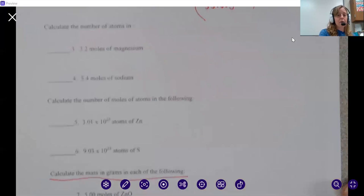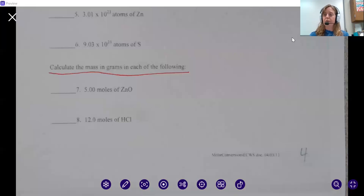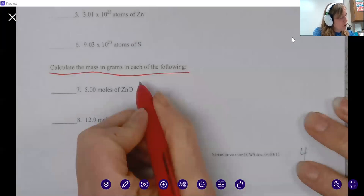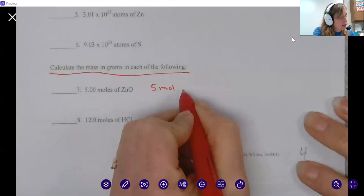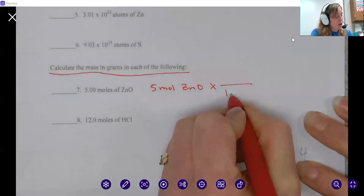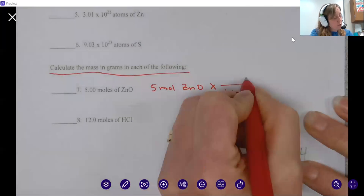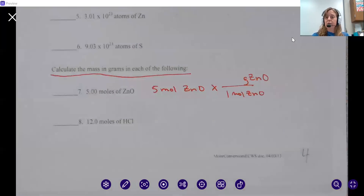Now let's look at the bottom here. It wants you to calculate the mass in grams of each of the following. We're going to flip that reciprocal. Instead of having one mole at the top of our conversion factor, we flip it and one mole will be on the bottom. We start with five moles of zinc oxide. One mole of zinc oxide goes on the bottom, and we're looking for grams.